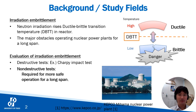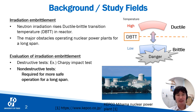This troublesome irradiation embrittlement must be constantly checked. Therefore, test specimens made of the same steel as that used in the reactor are placed in the reactor. These specimens are sampled and inspected to evaluate the degree of irradiation embrittlement. However, since this test destroys the specimens, the test can only be performed for the number of specimens that have been placed in advance. Therefore, a method to evaluate the degree of embrittlement without destroying the material is required for the long-term use of nuclear reactors.